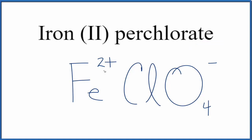The iron is 2+, as the Roman numeral 2 tells us. And the perchlorate ion is 1-. So if we had 2 of these perchlorate ions, 2 times 1- equals 2-, which would balance out the 2+.